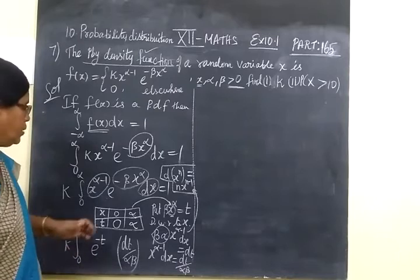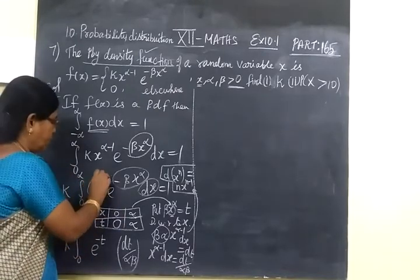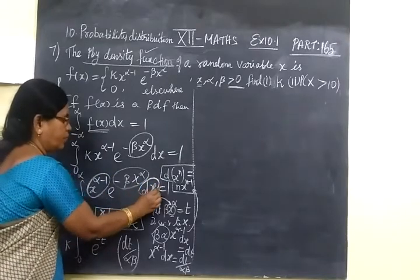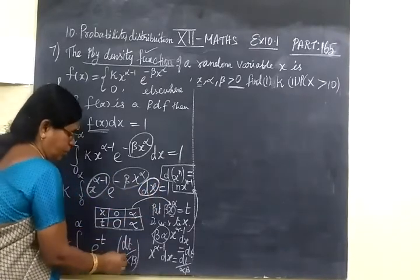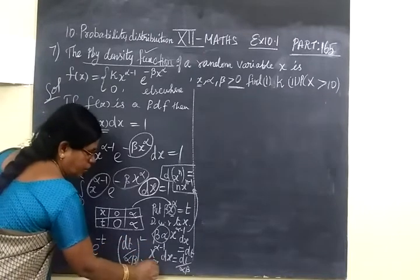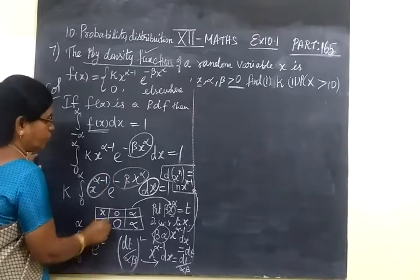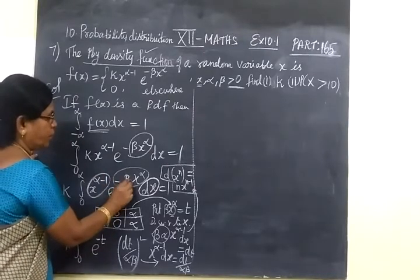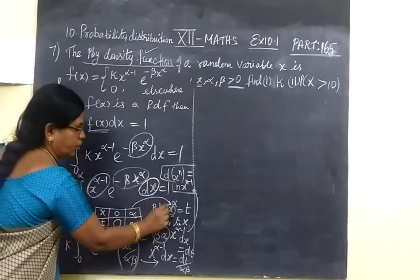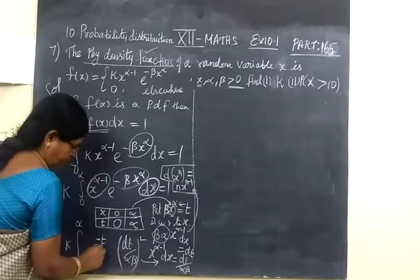Students find it difficult in substituting this. For x^(α-1) dx we are substituting dT by αβ, and for β·x^α we have already taken T, so E power minus T remains. Then we take alpha beta and dT by alpha beta, leaving E power minus T and dT.